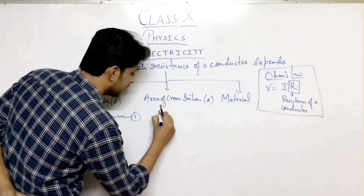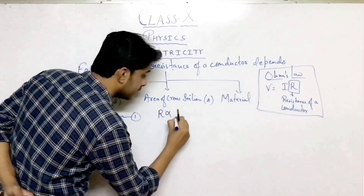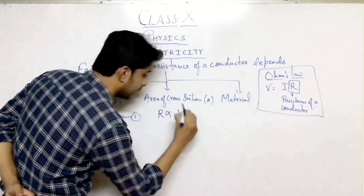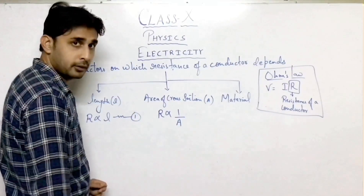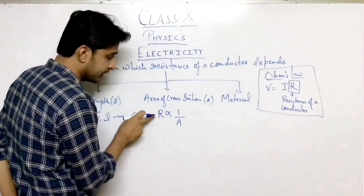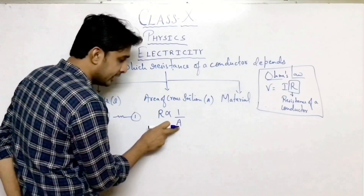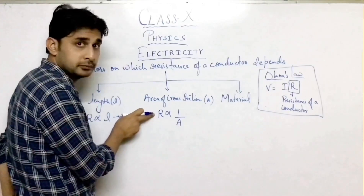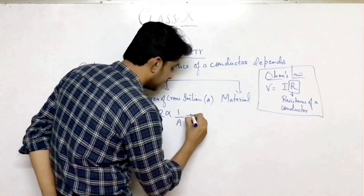So resistance is inversely proportional to area. Which means if area is more, resistance will be less, and if area is less, resistance will be more.